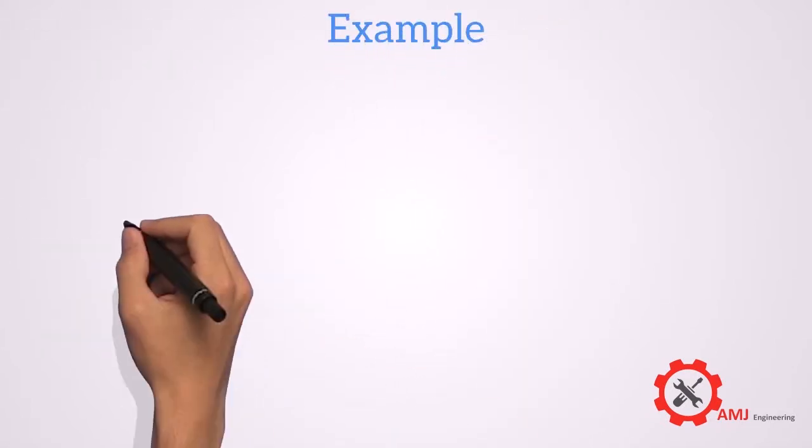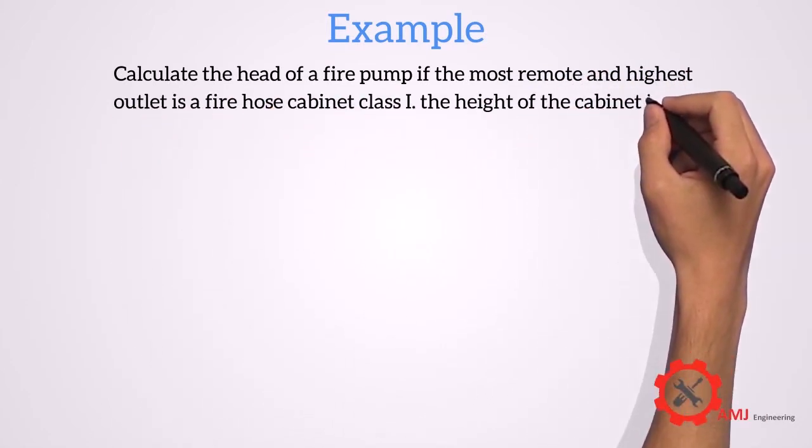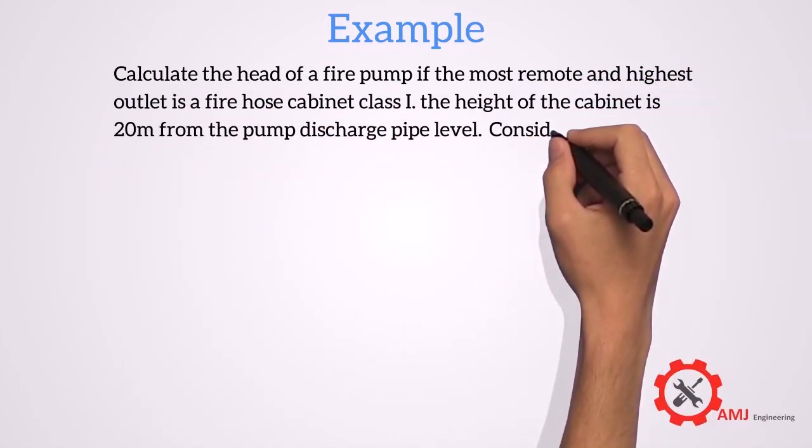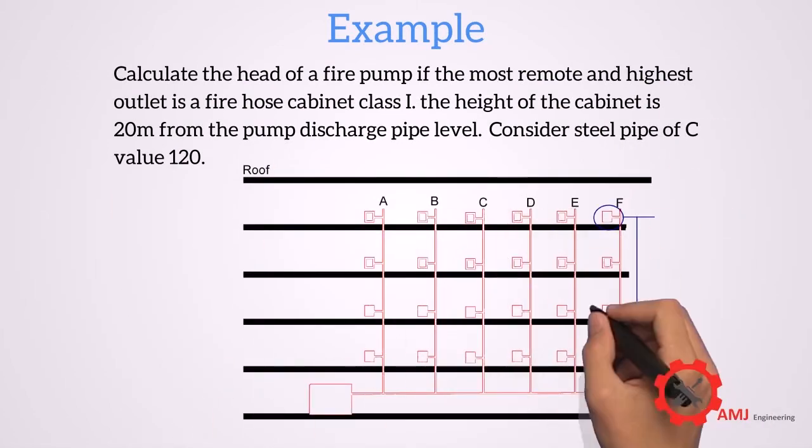Example: Calculate the head of a fire pump if the most remote and highest outlet is a fire hose cabinet class 1. The height of the cabinet is 20 meters from the pump discharge pipe level. Consider steel pipe of C value 120.